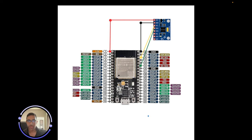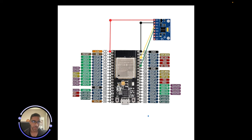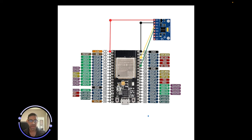Welcome back to the channel. Today is part one of the MPU6050 angle series with the ESP32. We'll be talking about how to get accurate angle measurements with the MPU6050 using the ESP32 microcontroller. By the end of this video you will be able to get accurate angle representation of your MPU6050 in space, whether you're doing simple tilt applications or using a real life robot.